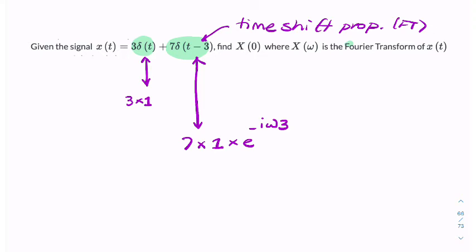Putting those together, because I have a plus sign here, I can use the linearity property to say that the Fourier transform, X of omega,